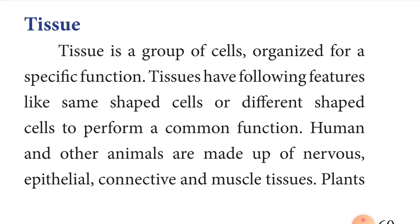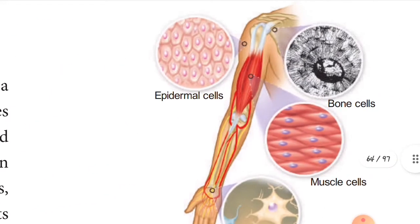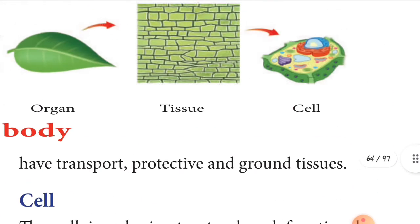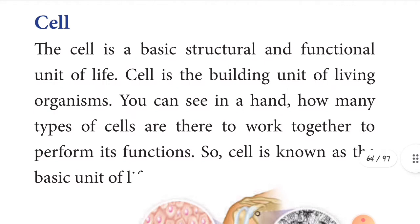Tissues is a group of cells organized for specific functions. Tissues have the following features: same shaped or different shaped cells that form a common function. Humans and other animals are made up of nerves, epithelial tissues, connective tissues, and muscle tissues. Plant cells have transport, protective, and ground tissues.